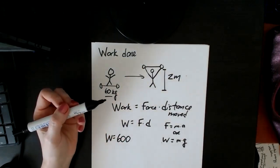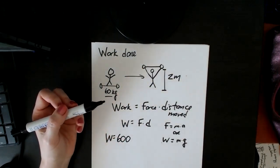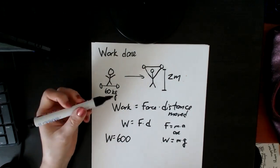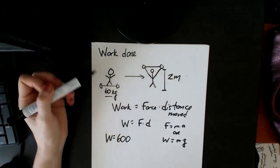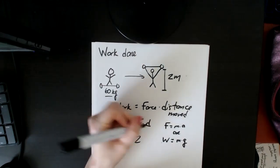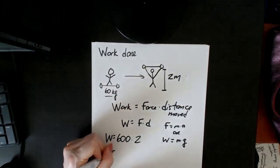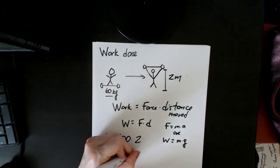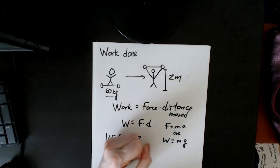If you don't understand how I got that, go back and watch the unit one equations video, please. And then the distance moved. And I said he lifted it two meters, so he lifted it. Distance is always in meters, so it's 2. So he did a total of 1,200.